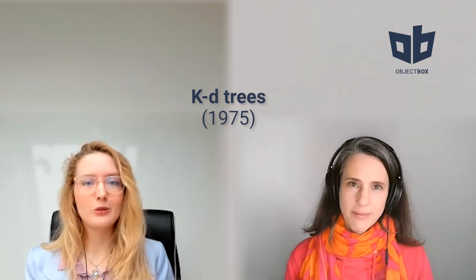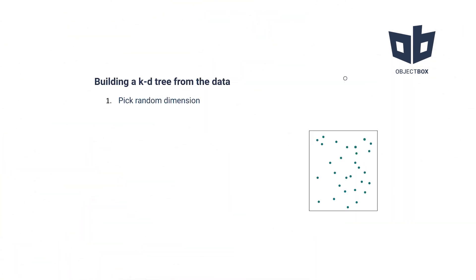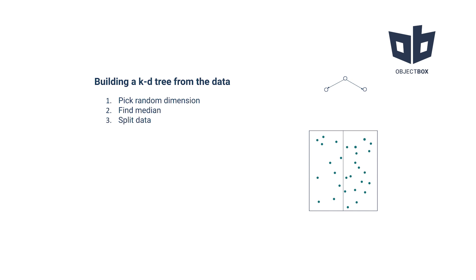The way how you search the data depends on the way how you store the data. The simplest ANN algorithm was established in 1975 and is called KD trees. How to build a KD tree? Let's assume that we have our data. First, we need to pick a random dimension. Then, we find the median. And finally, we split the data with this median. The process is continued until the whole KD tree is built.